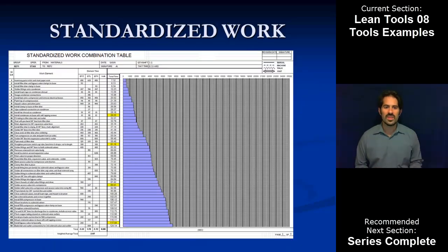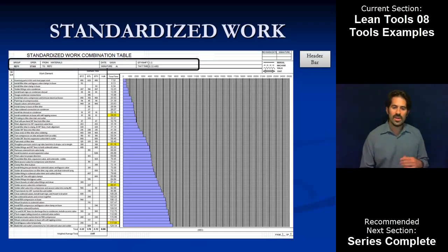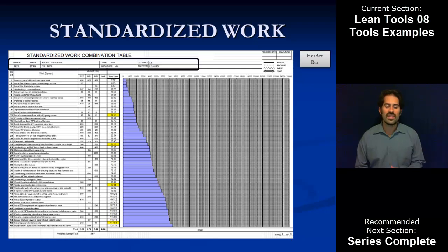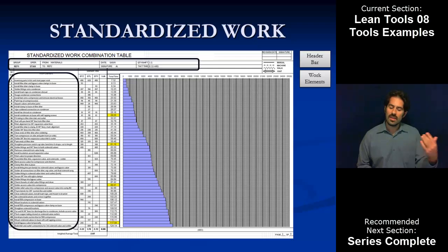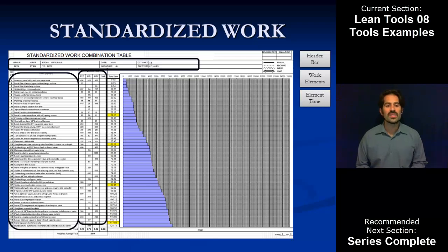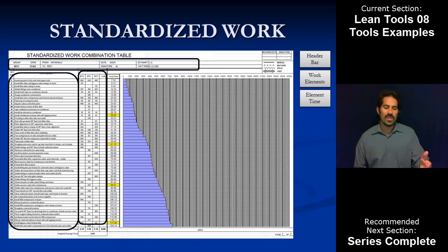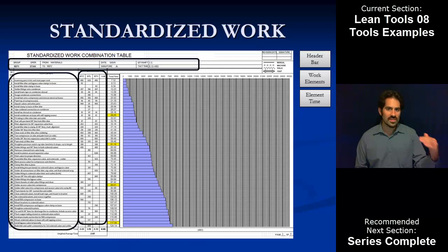Taking a look at a sample standardized worksheet — everyone's will be totally different, so tailor it to the best needs of the organization. It includes some basic information everyone should include: a header bar identifying the process, the previous and next process, who the operator is, and what the takt time should be. Then there's a list of the actual work elements being done in sequence, with their associated element times — how long each step should take. This is valuable for production planning, rebalancing, and visual management, so a supervisor or team member can walk by and immediately see where that team member should be.